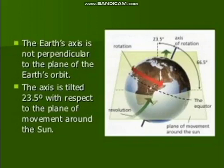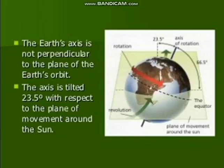Rotation moves in the east-west direction, and revolution moves in the north-south direction. In between is the imaginary equator. What is the equator? The equator divides the earth into the northern hemisphere and the southern hemisphere.